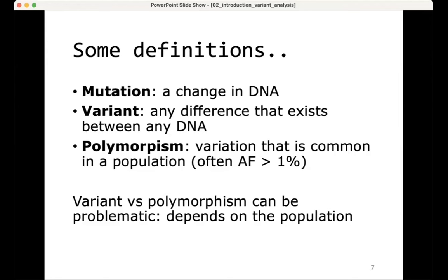A lot of people also use polymorphism, or for example single nucleotide polymorphism — SNP. Typically, especially in human genetics, a SNP or polymorphism is a specific variant that is common in a population, with an allele frequency of more than 1%. However, whether a variant is a polymorphism can be very problematic and depends heavily on the population — a variant can be a polymorphism in a European population but not in an African population. Therefore, we talk more and more mostly about variants because it is very difficult to define whether something meets that polymorphism threshold.